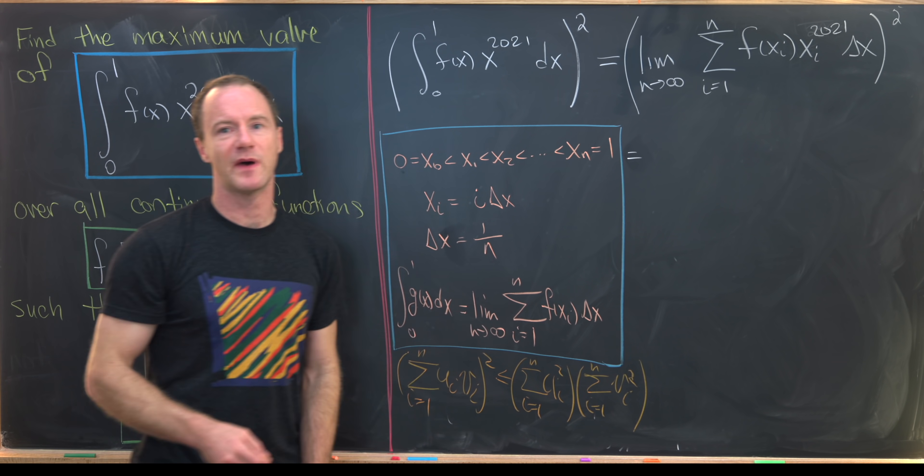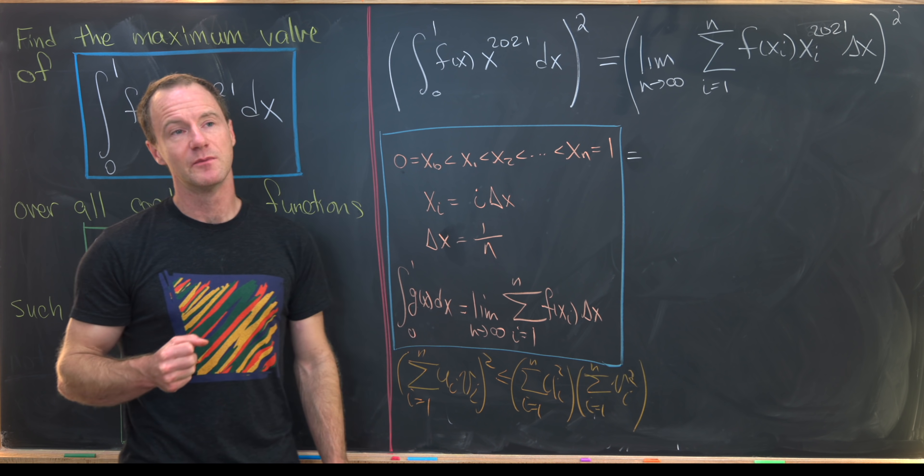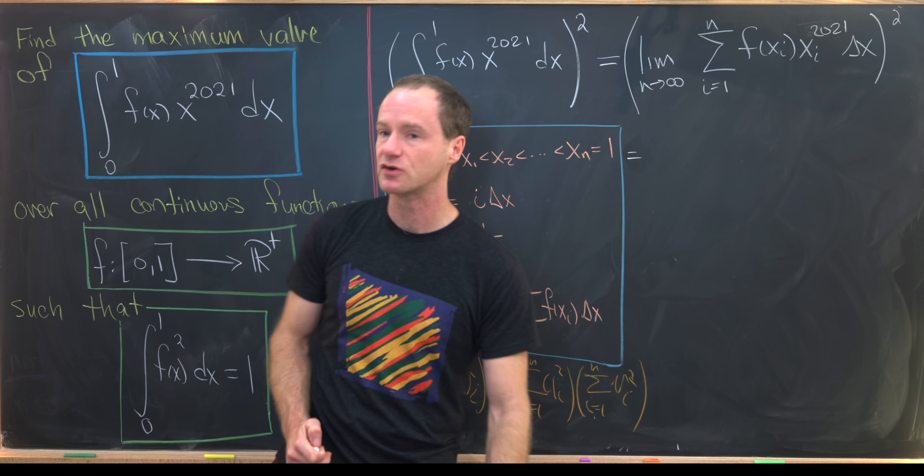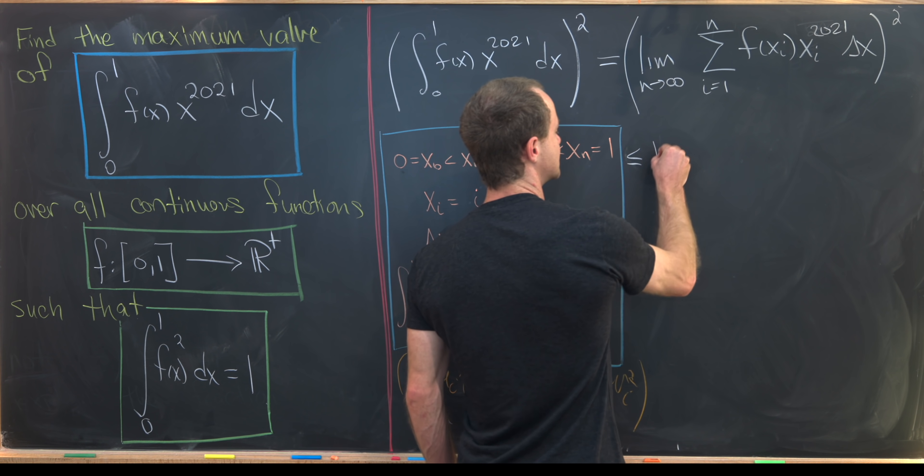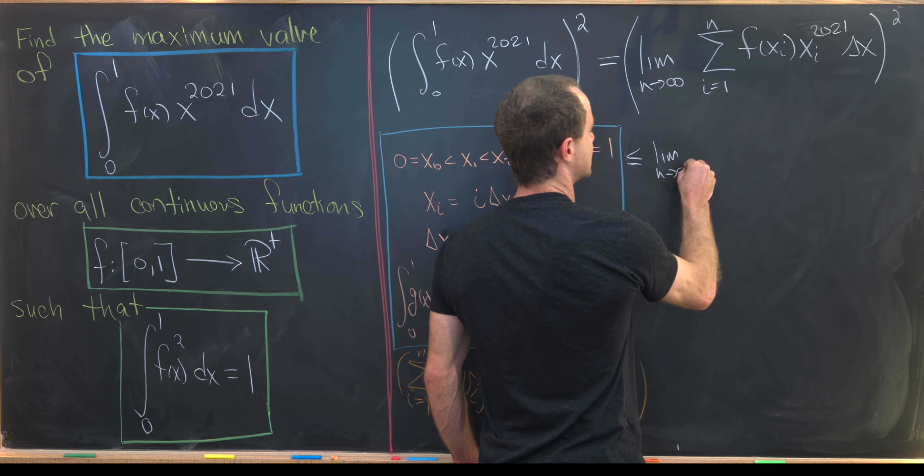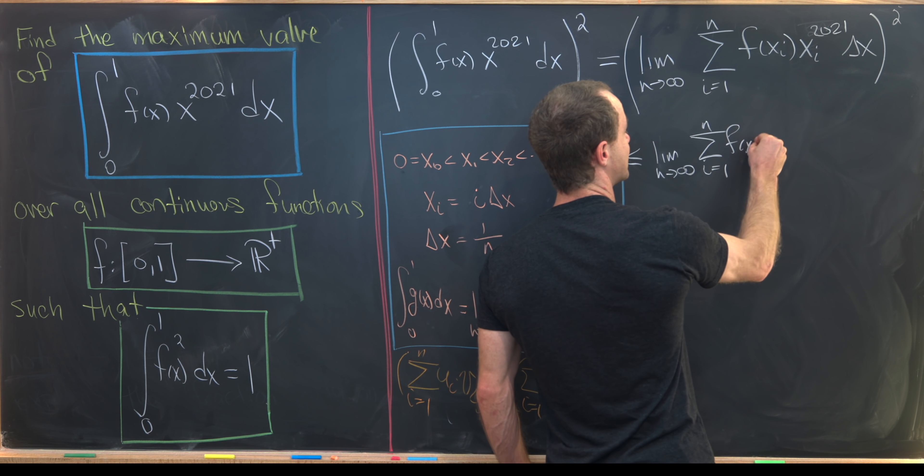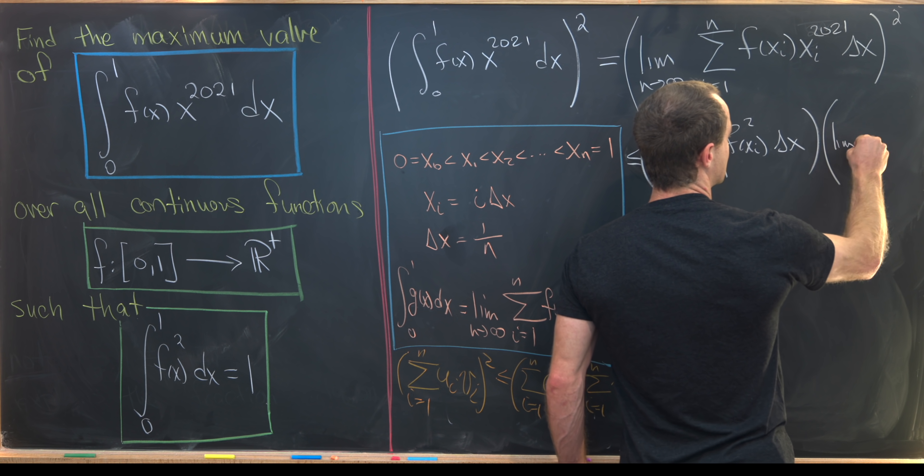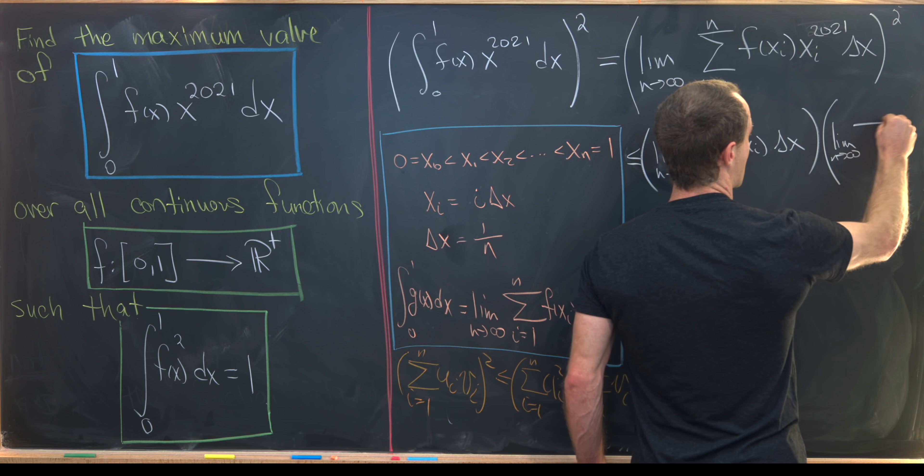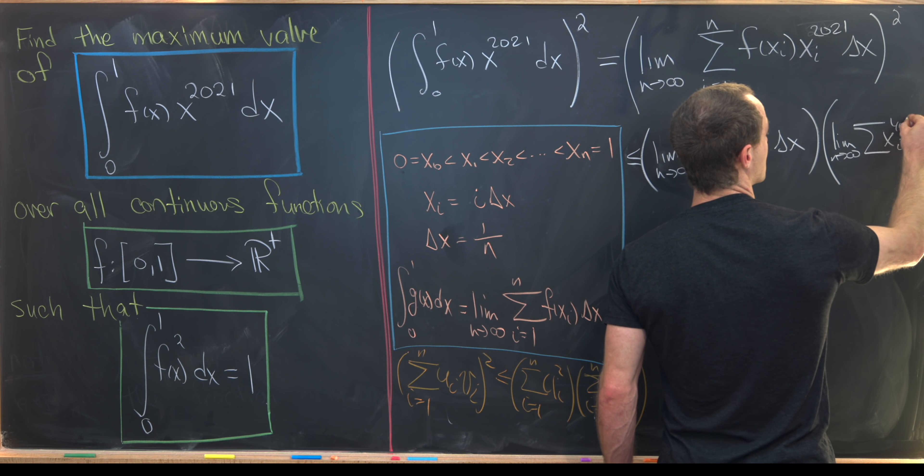There's a little bit going on in the background with the fact that both of these limits exist, so we can pull the limits apart, but that follows because we have integrable functions here. So let's go ahead and write this down. This is going to be less than or equal to the limit as n goes to infinity of the sum as i goes from 1 up to n of f(xi) squared delta x times the limit as n goes to infinity of the sum of xi to the 4042 delta x.